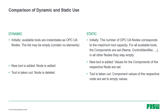If a tool is removed from the machine in the dynamic case, the node is deleted — it is removed from the list. In the static case, if a tool is taken out, the component values of the respective node are set to empty values again.